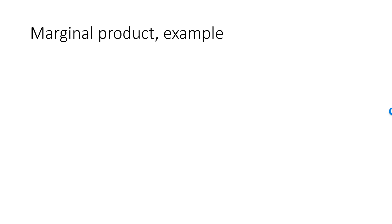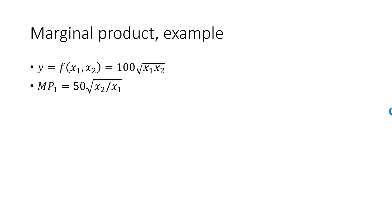Here is a simple example of marginal products using a Cobb-Douglas production function: y is equal to 100 times the square root of x1 times x2. To find MP1, we take the partial derivative of f with respect to x1. The derivative of square root of x1 is 1 divided by 2 times the square root of x1, and 100 divided by 2 is 50. So MP1 is 50 times the square root of x2 over x1, which is defined for all values of x1 and x2 as long as x1 is strictly positive. Similarly, MP2 is equal to 50 times the square root of x1 over x2.